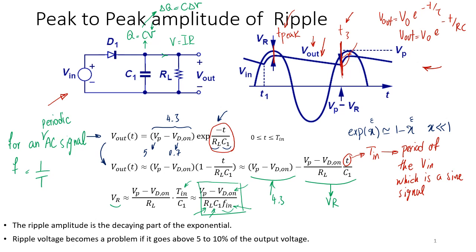Why does increasing frequency help? Mathematically it's clear — frequency is in the denominator. Intuitively, the higher the frequency, the faster the sinusoidal goes up and down. The ripple stops when the sinusoidal comes back up. So if you had double the frequency, the sinusoid would come back up sooner, meaning the discharge would be stopped faster, giving less ripple — almost half the ripple. So all three parameters — R, C, and F — are important.